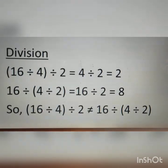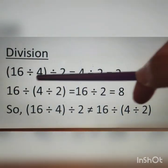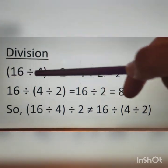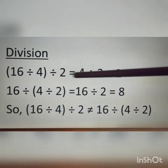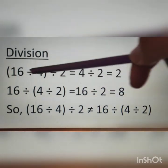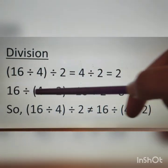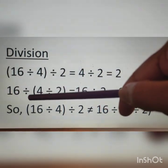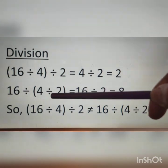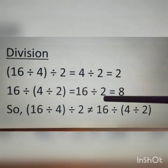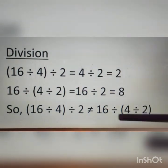Next, examples of division. In (16 ÷ 4) ÷ 2: 16 ÷ 4 is 4, then 4 ÷ 2 equals 2. In the next line, the brackets are interchanged: 16 ÷ (4 ÷ 2) — first 4 ÷ 2 equals 2, then 16 ÷ 2 equals 8.